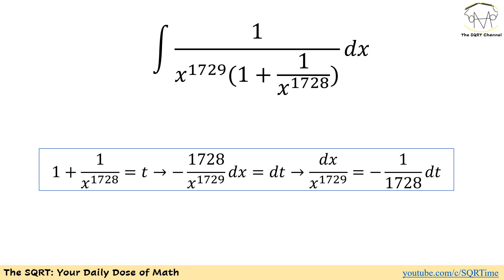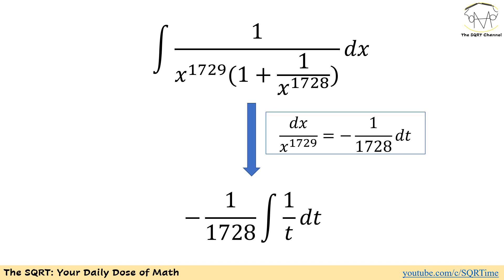The replacement I will use is t equals 1 plus 1 over x to the power of 1728. Taking the derivative of both sides: the first term gives 0, and for the second term I will have x to the power of negative 1728, whose derivative is negative 1728 over x to the power of 1729 dx. So dt equals that, and dx over x to the power of 1729 equals negative dt over 1728.